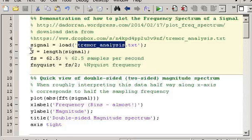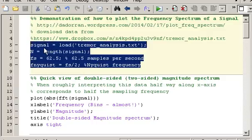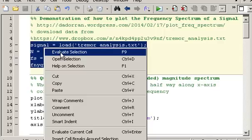Now you can use whatever data that you have available, you don't have to use this particular data. But do set up these variables: set up capital N to be equal to the length of the signal, which is the number of samples in the signal. FS is the sampling frequency, and F_Nyquist is half the sampling frequency, which is the Nyquist frequency. So let me just evaluate that to load in the data and set up those variables.